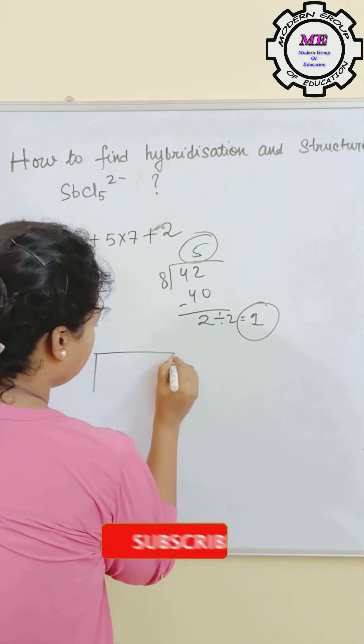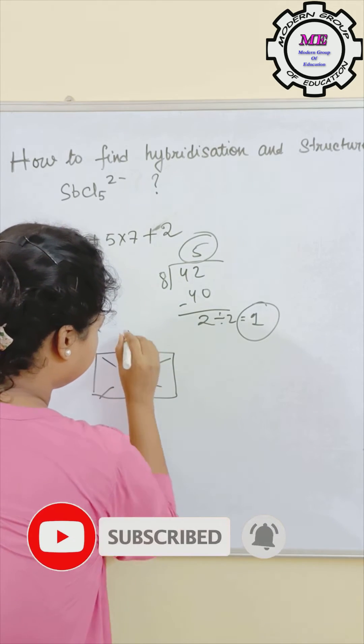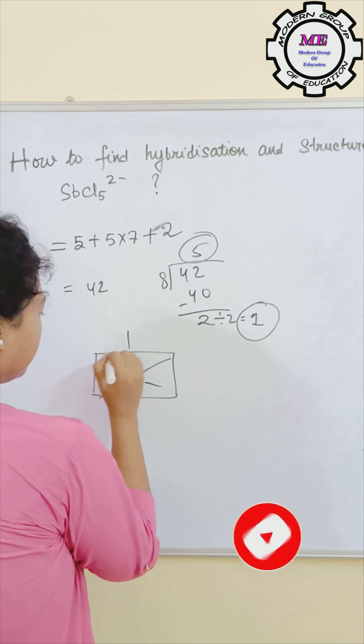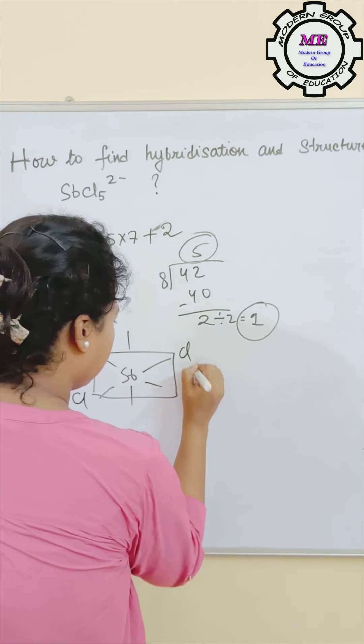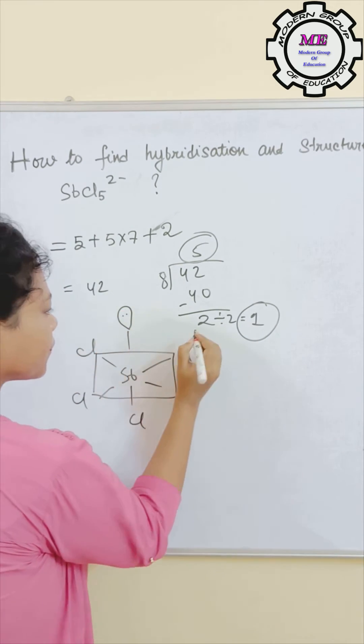So the structure should be octahedral. So I will be placing Cl, Cl, Cl, Cl and here I will be placing the lone pair.